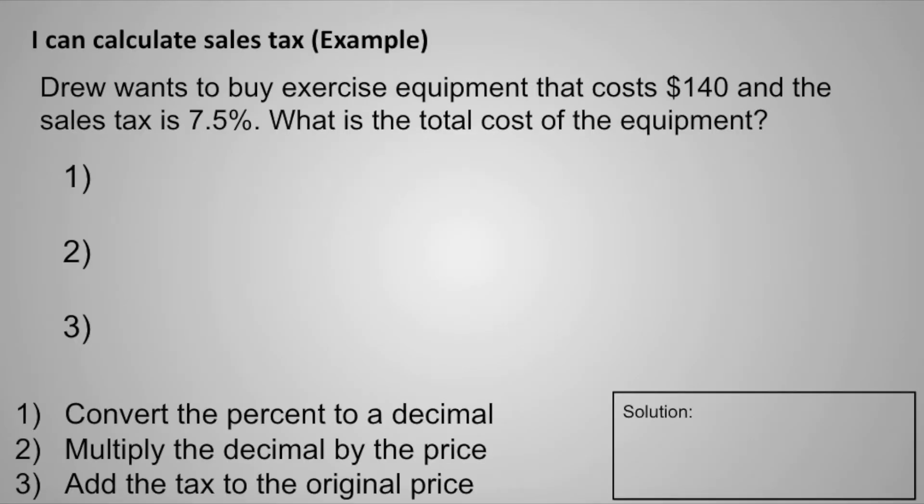Here's our first example. It reads, Drew wants to buy exercise equipment that costs $140, and the sales tax is 7.5%. What is the total cost of the equipment?